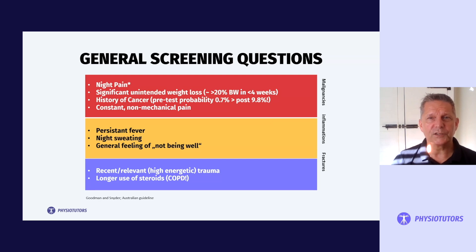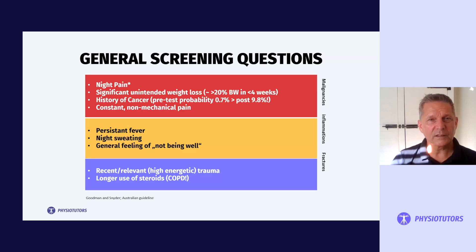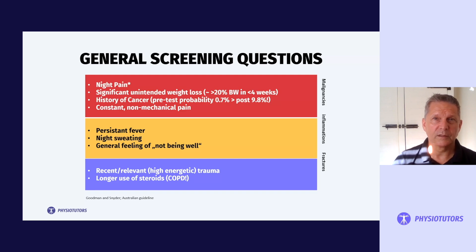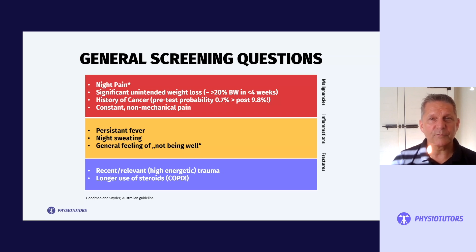These are general screening questions you would ask every patient no matter what their complaint might be. The first four — night pain, significant unintended weight loss, history of cancer, and constant non-mechanical pain — hint at the possibility of malignancies. Night pain is defined as having so much pain that you are unable to fall asleep, and if by complete exhaustion you do fall asleep, that same pain will wake you up. That sort of night pain is a red flag — a 10 out of 10 on a numerical pain rating scale constantly. A significant unintended weight loss, something like more than 20% of your body weight within four weeks, is also a red flag.